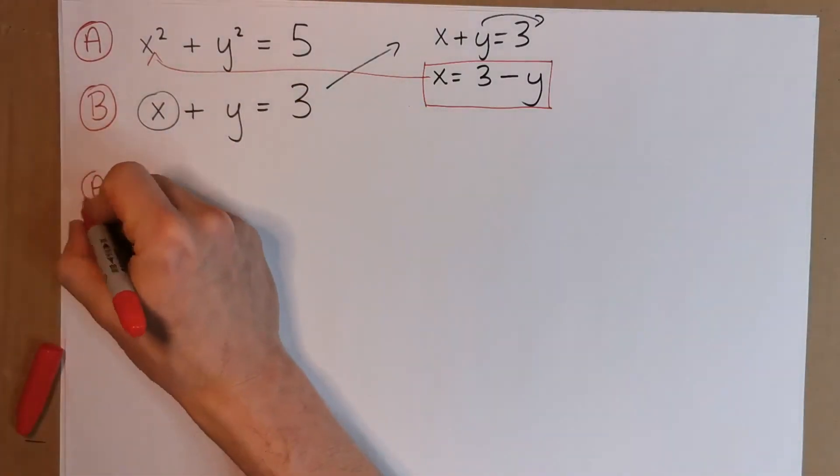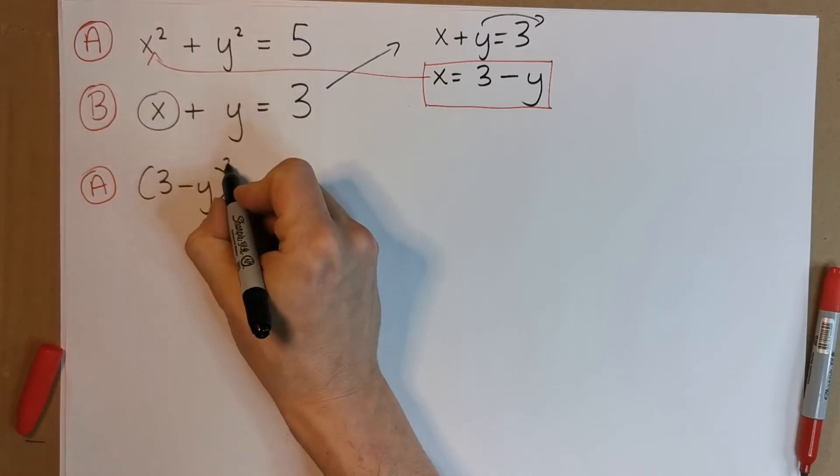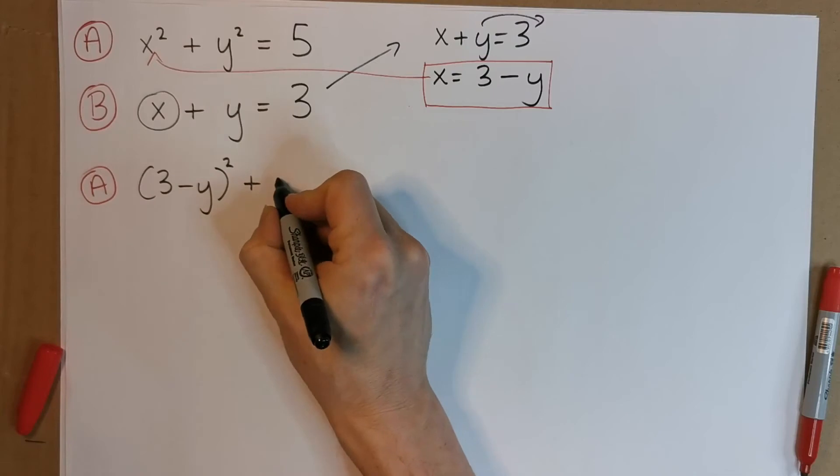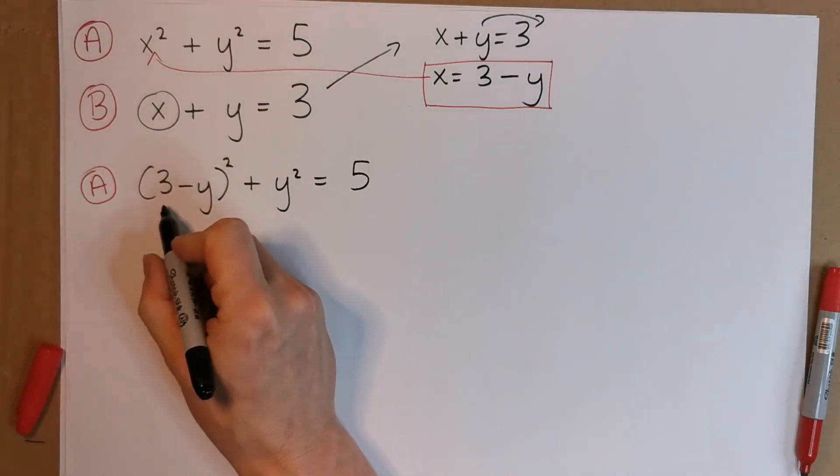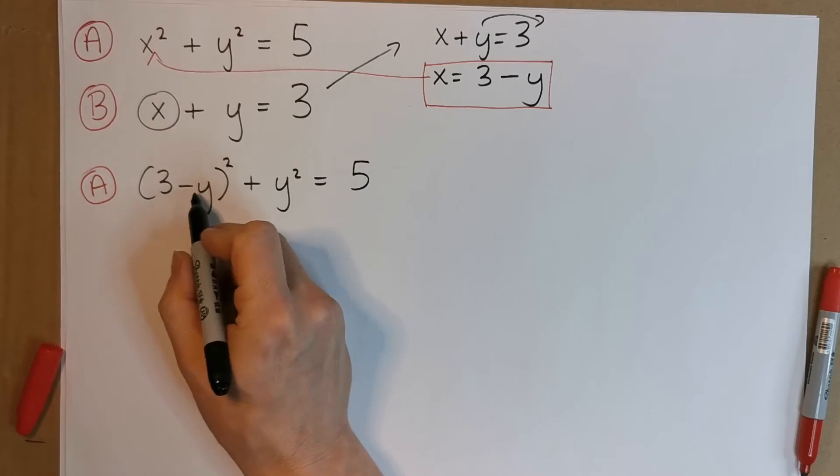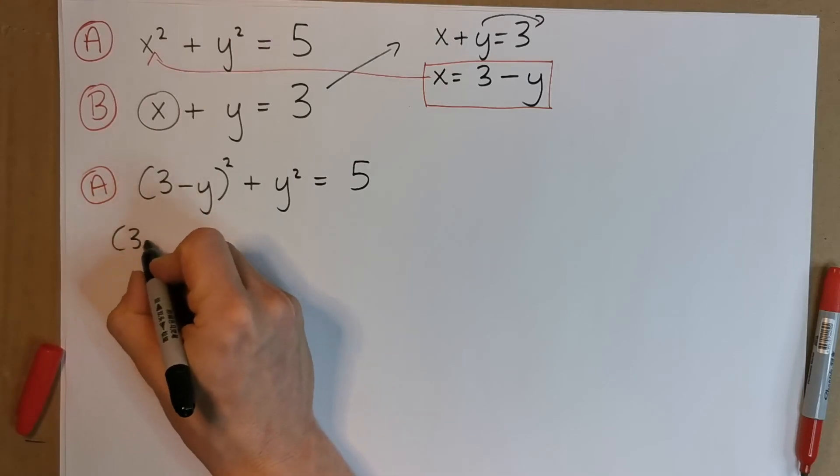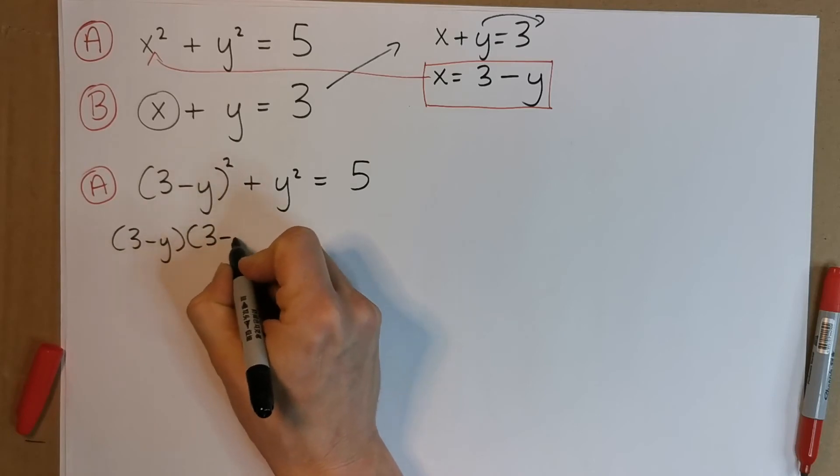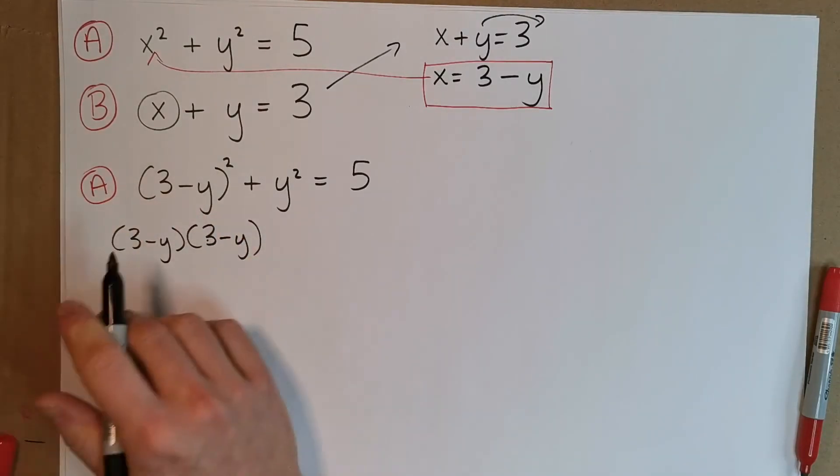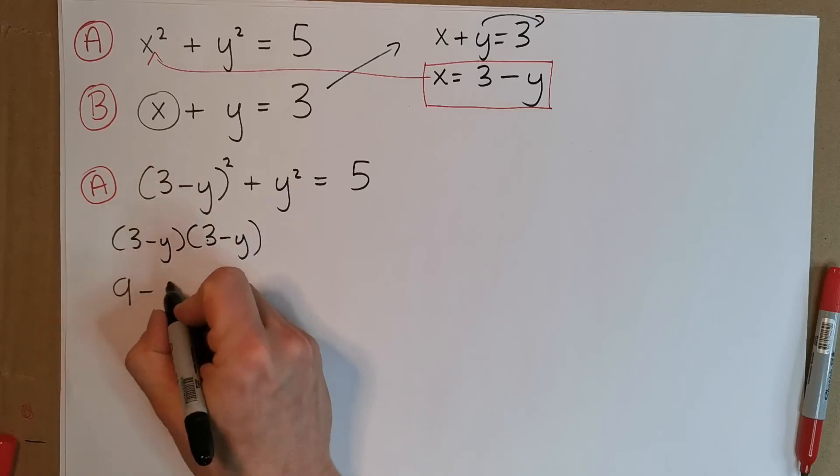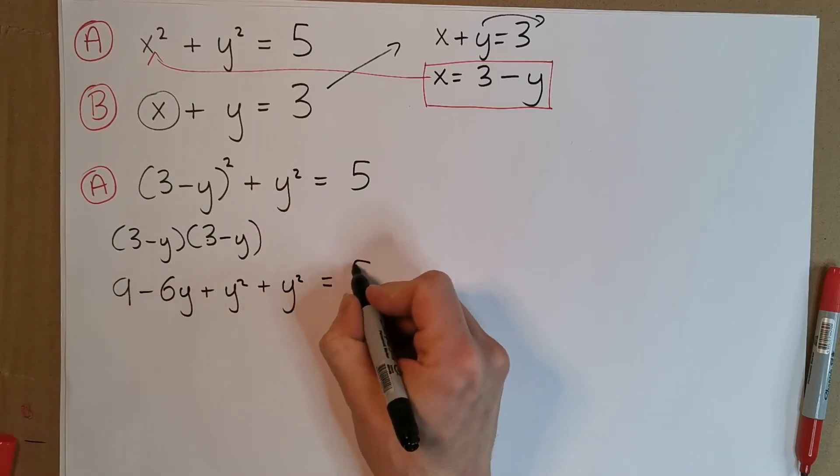This is where our algebra skills are going to be tested. So let's replace this x by 3 minus y. So the equation A now is going to look like this. It's going to be 3 minus y instead of x. But remember, that x was squared, so this stuff must be squared. And then we have plus y squared, and we have equal to 5. We need to square out this bracket. Be super careful here. I often see people square on the first part and the second part and they're done, but that's completely not right because they're separated by this subtraction symbol. So it's going to be 3 minus y by 3 minus y. I can do it quickly in my head. It's going to be 9 minus 6y plus y squared. And then we have another y squared out here, and we have equals to 5.